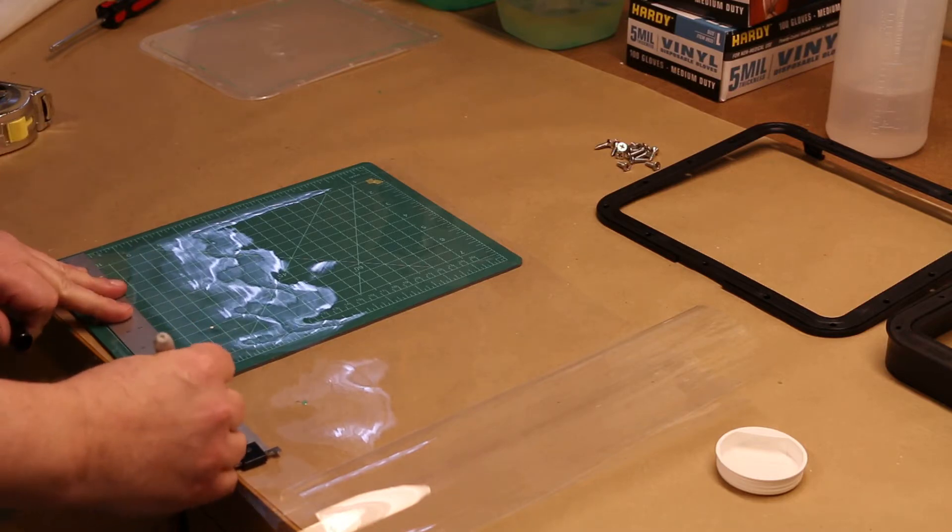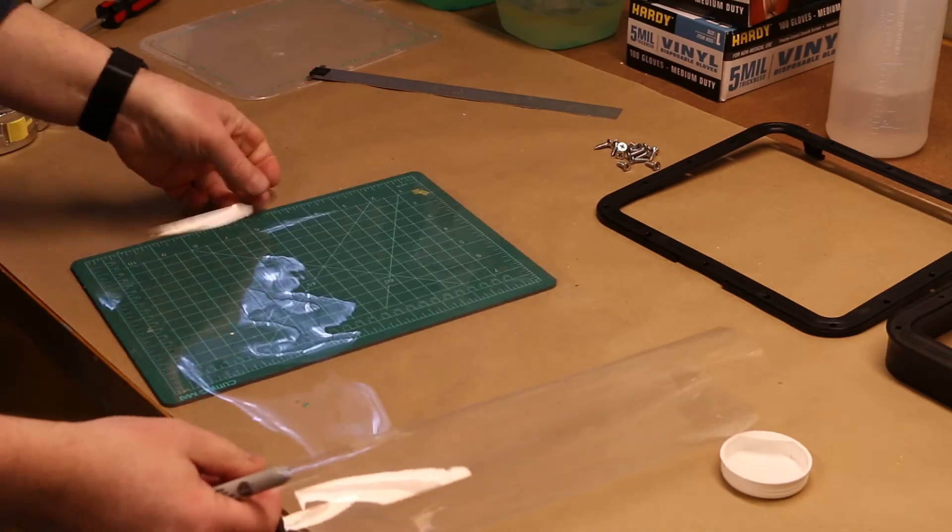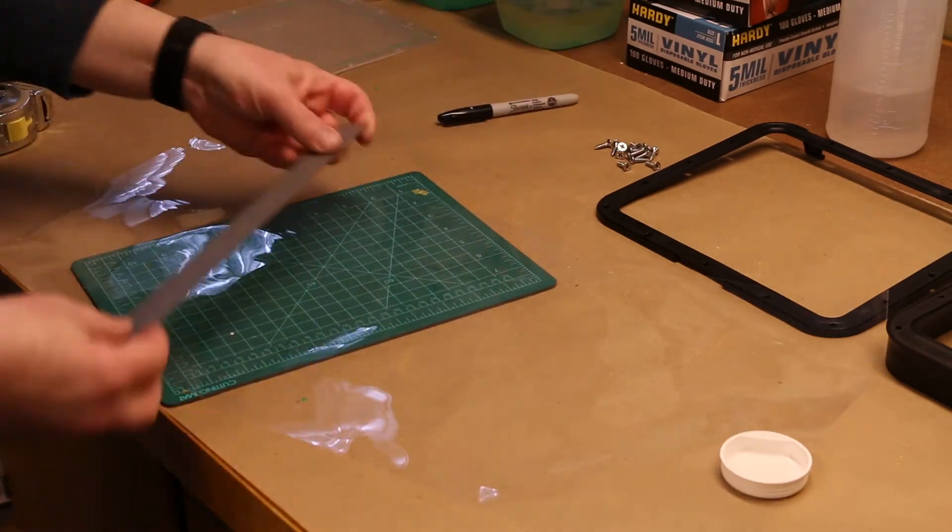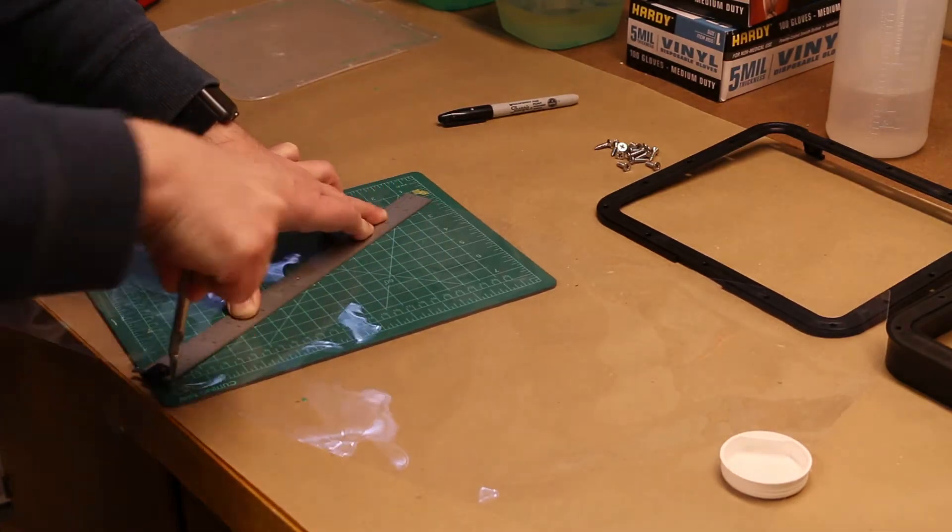Then I got the FEP film out and cut off a piece to use for the vat. You have to make sure that the film is larger than the tank. You're going to need this to pull it tight once you start reinstalling it.